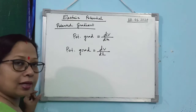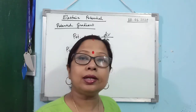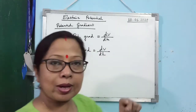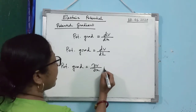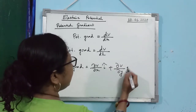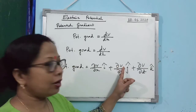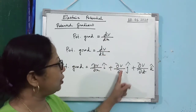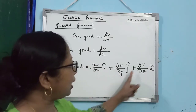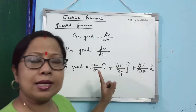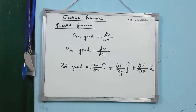Suppose R depends on three dimensions — the point of observation is in space — then R is a function of x, y, z. In that case, potential gradient can be written as del V/del x (i-hat) plus del V/del y (j-hat) plus del V/del z (k-hat). These are partial derivatives. I, J, K are unit vectors along the x, y, and z axes respectively.